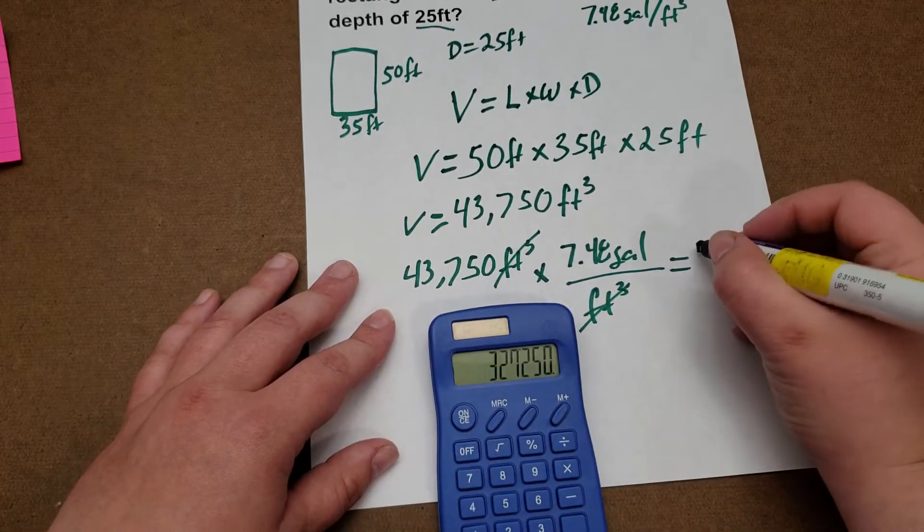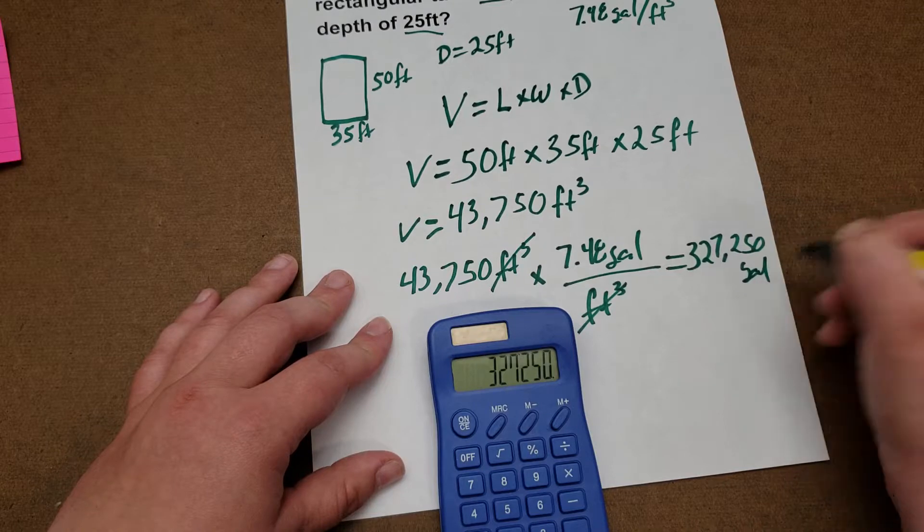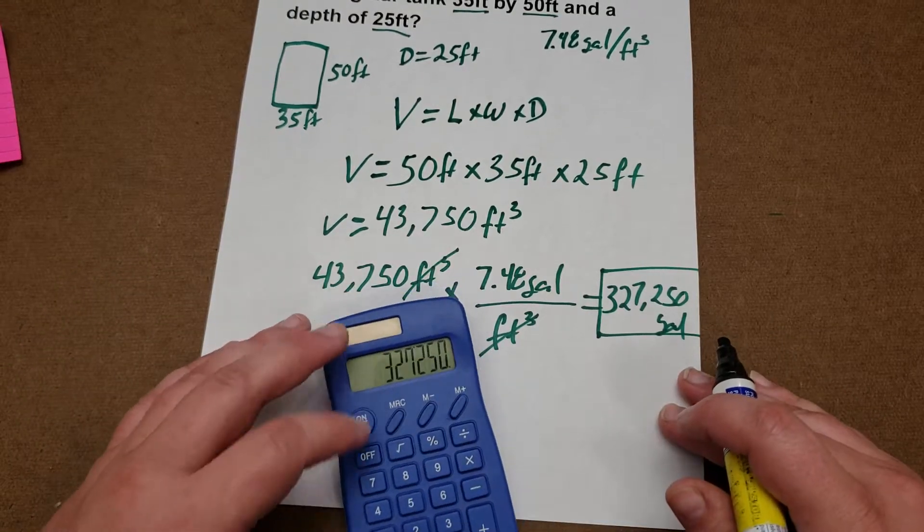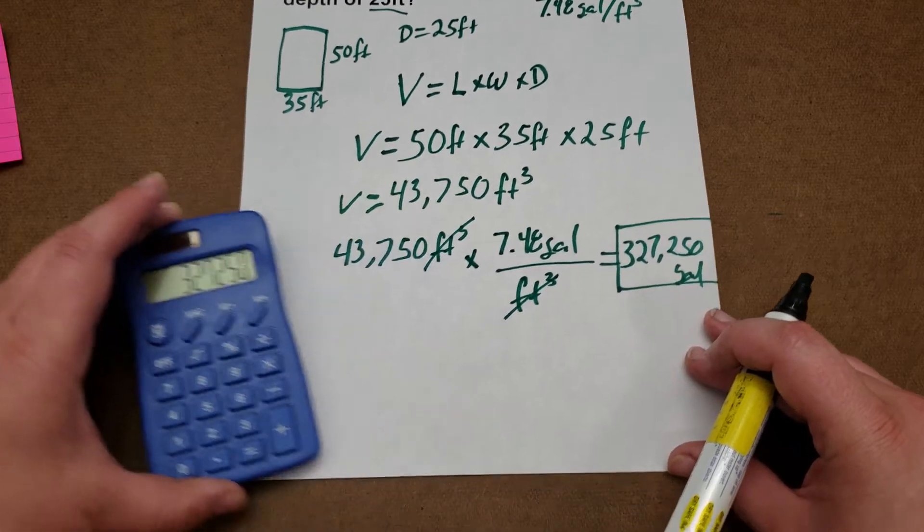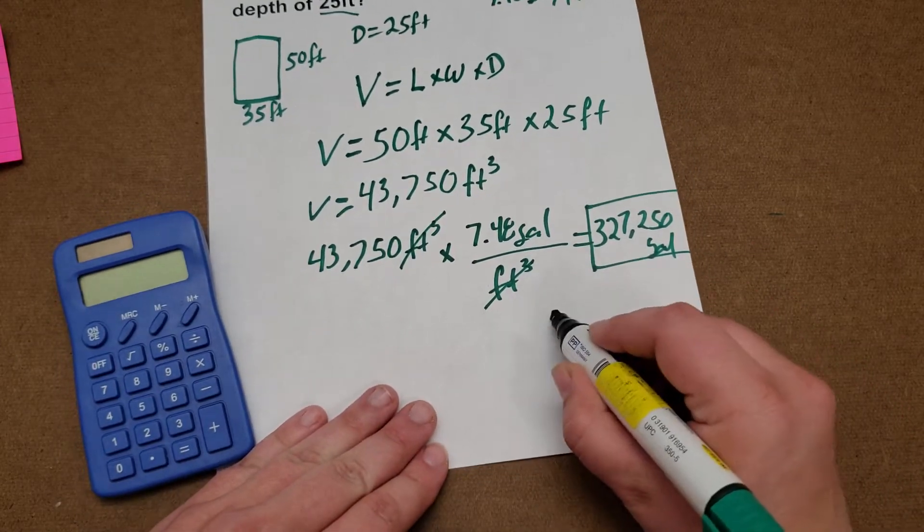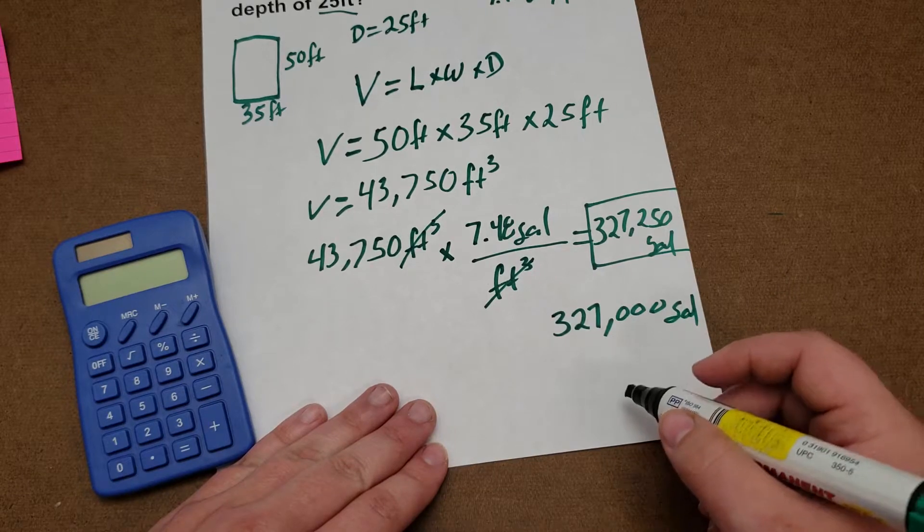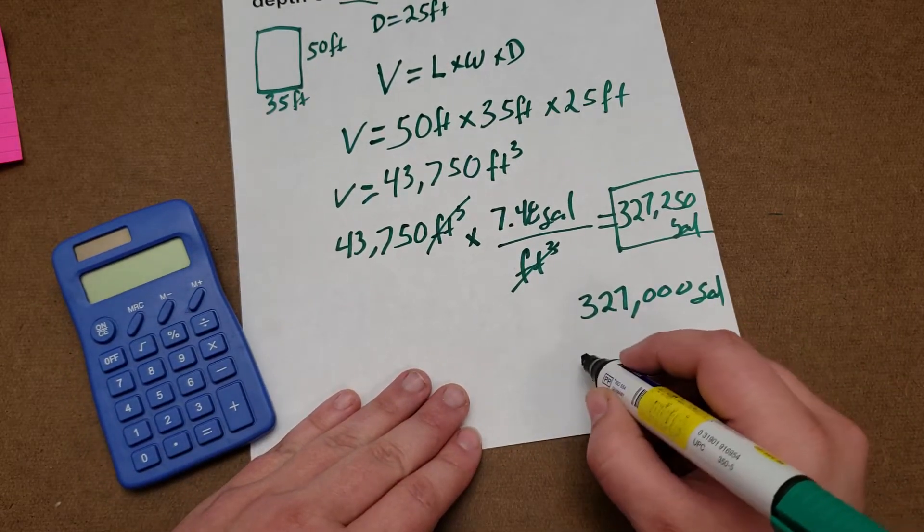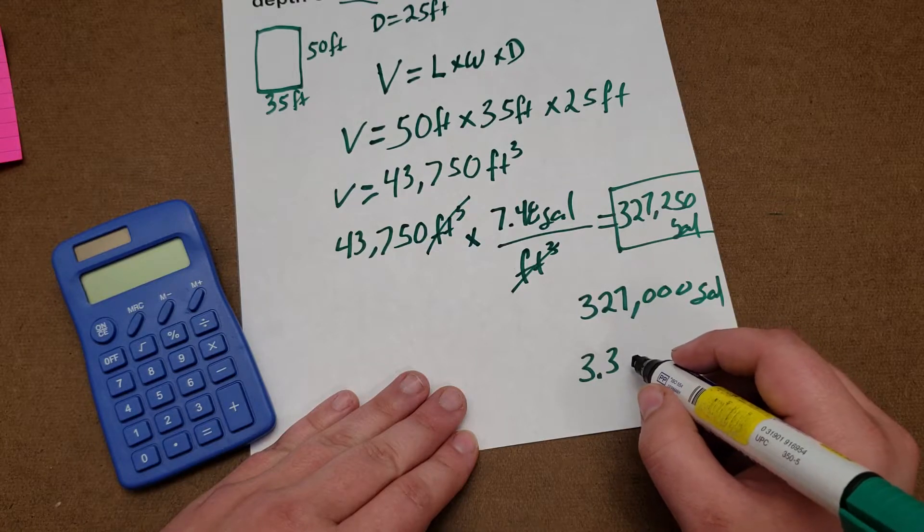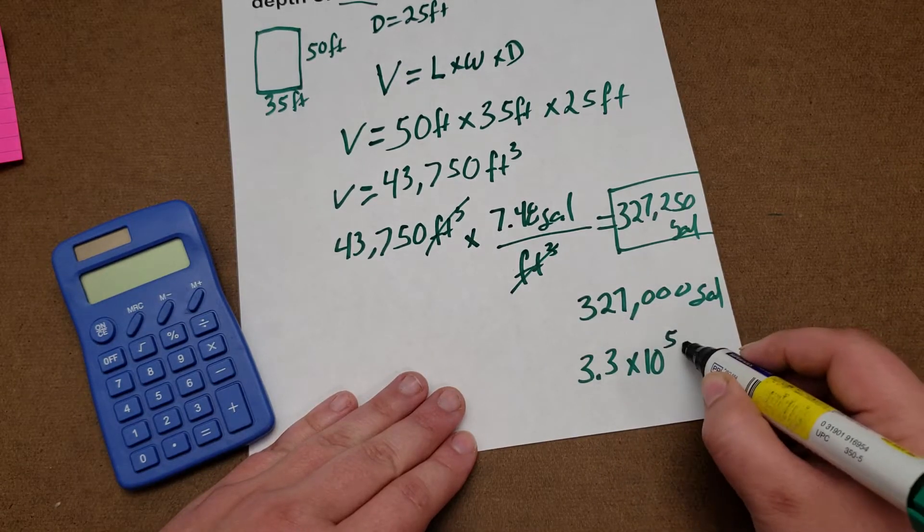So we end up with 327,250 gallons, and that is our final answer. Depending on how much the test rounds or your certification board does it, the answer could be this exact number, it could be 327,000 gallons, or it could be 320,000 gallons, or it could be 3.3 times 10 to the 5 gallons.